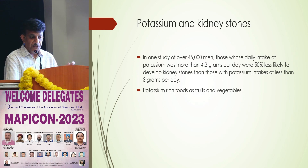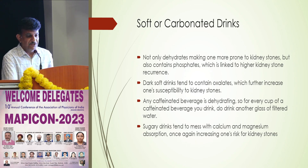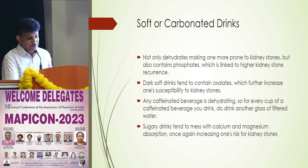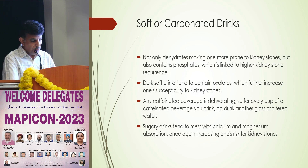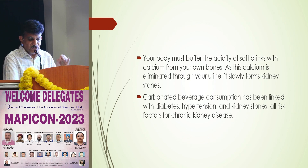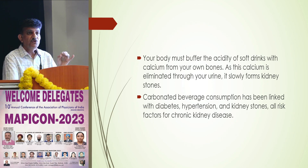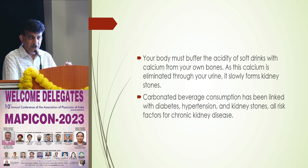If you take adequate potassium, it can help reduce the risk of stone recurrence by up to 50%. Use potassium in the form of fruits and vegetables. Soft and carbonated drinks contain high oxalate. Caffeinated drinks are dehydrating — for every cup of caffeinated beverage, drink an extra glass of water. Sugary drinks lead to calcium and magnesium malabsorption, increasing stone risk. Your body buffers the acidity of such drinks with calcium, leading to hypercalciuria. Carbonated beverages are also linked to diabetes and hypertension, which are indirect causes of stone formation.